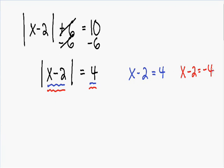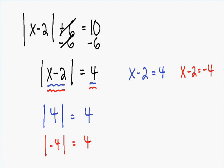Let me explain why this makes sense. If the inside of the absolute value is equal to positive 4, this makes the equation true because the absolute value of positive 4 is equal to 4. And if the inside of the absolute value is equal to negative 4, this also makes the equation true because the absolute value of negative 4 is equal to 4. So both of these equations make the original equation true.